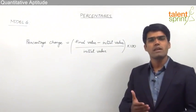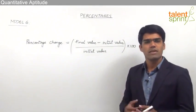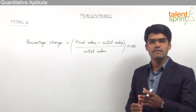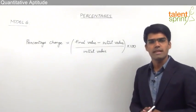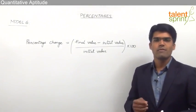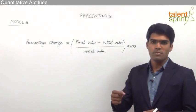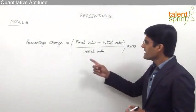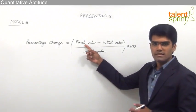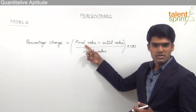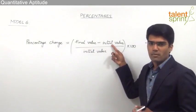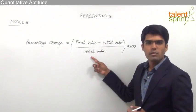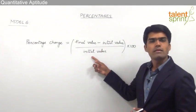Similarly, if the population of a country is given for various years — say, from 2001 to 2010 — then to find out the percentage change in population from 2001 to 2010, we take the final value (population in 2010) minus the initial value (population in 2001), divided by the initial value (population in 2001), into 100.